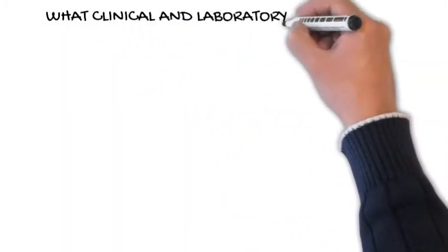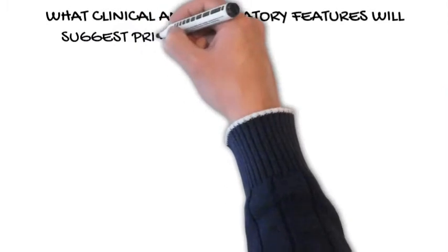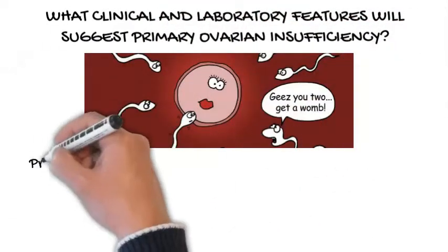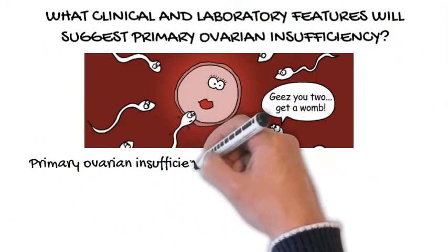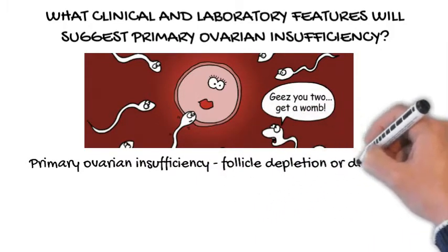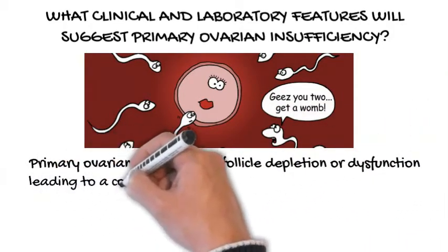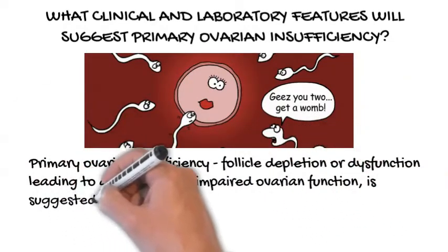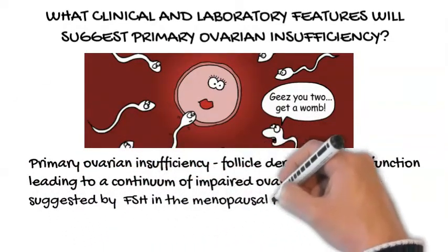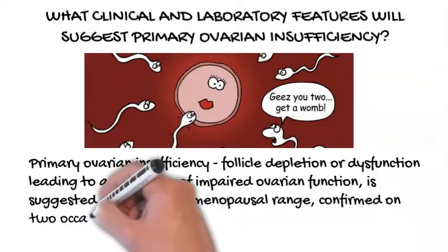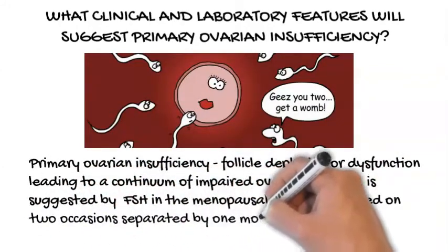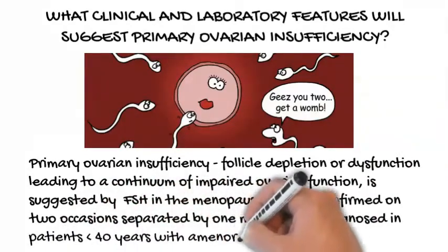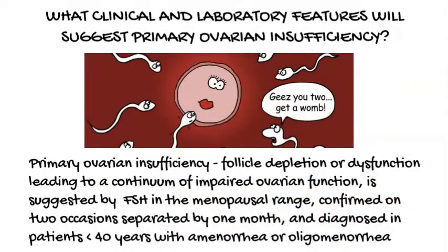What clinical and laboratory features will suggest primary ovarian insufficiency? Primary ovarian insufficiency, a condition characterized by follicle depletion or dysfunction leading to a continuum of impaired ovarian function, is suggested by a concentration of follicle-stimulating hormone in the menopausal range, confirmed on two occasions separated by one month, and diagnosed in patients younger than 40 years with amenorrhea or oligomenorrhea.